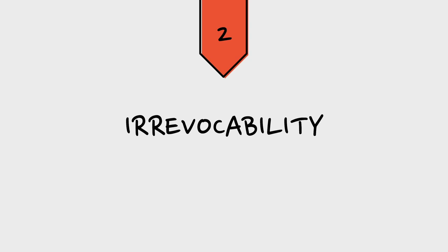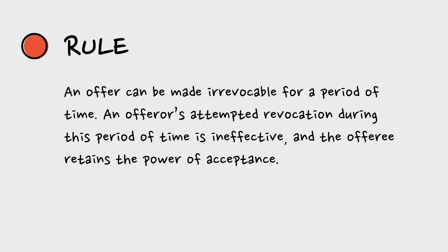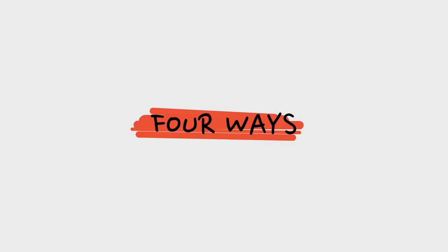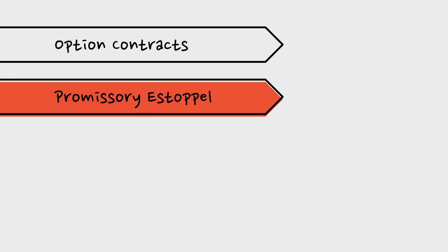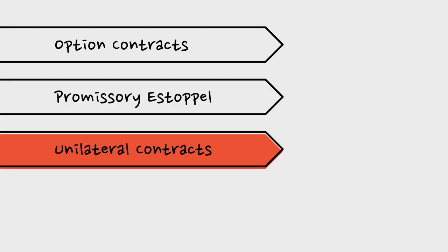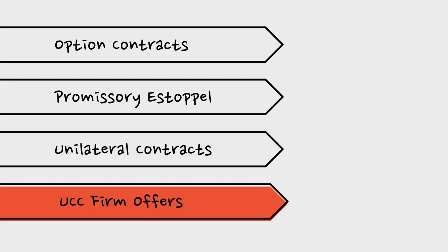That's a reminder of the general rules about the ability of an offeror to revoke. Now let's look at how one makes an offer irrevocable for a period of time — the offeror lacks the power to withdraw the offer and the offeree retains the power to accept within that period. We're going to focus on four ways: option contracts, estoppel or promissory estoppel, irrevocability in unilateral contracts, and the UCC-specific firm offer rule.